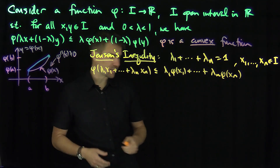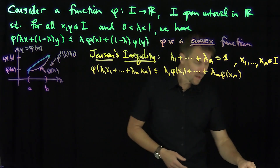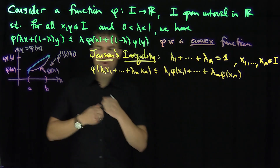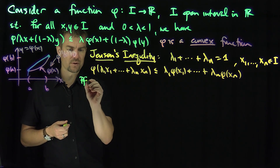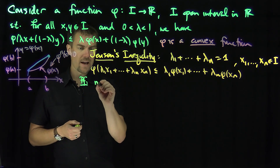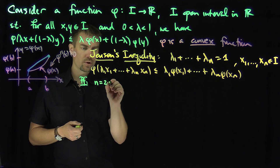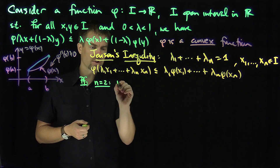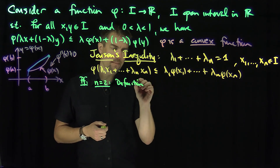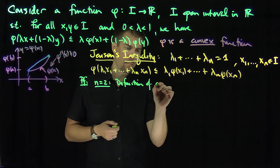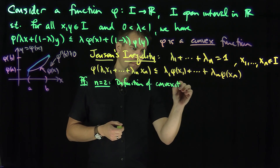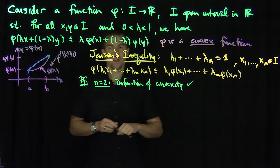Jensen's inequality follows from induction on n. The proof is by induction. When n equals 2, that's just the definition of convexity — so it's trivial in that case.